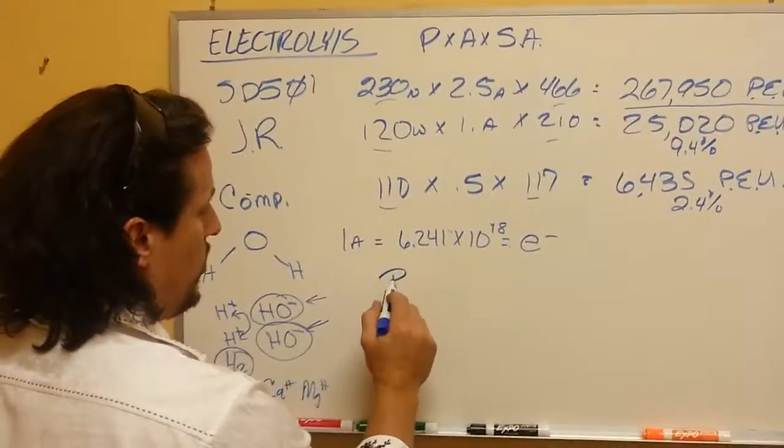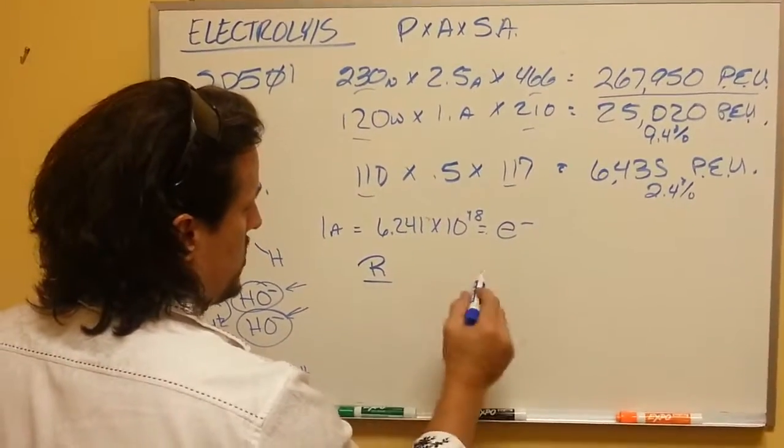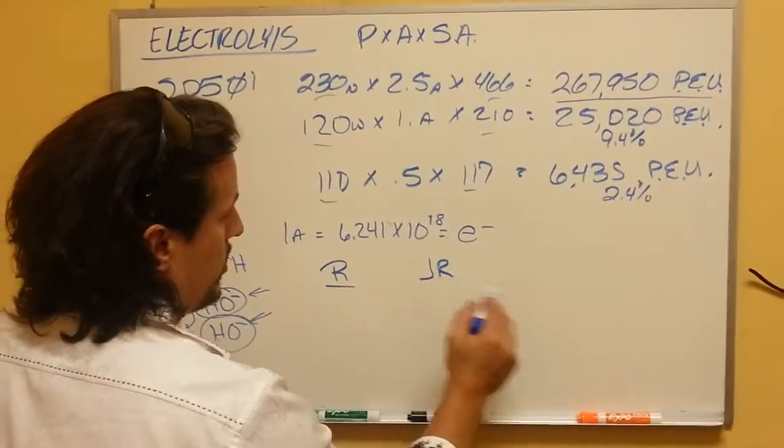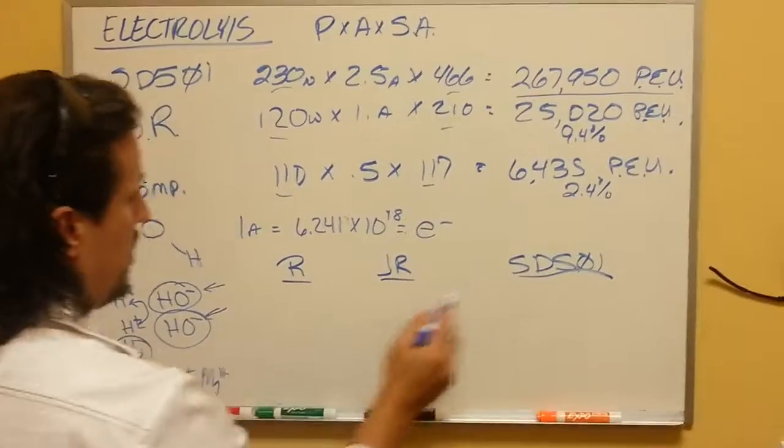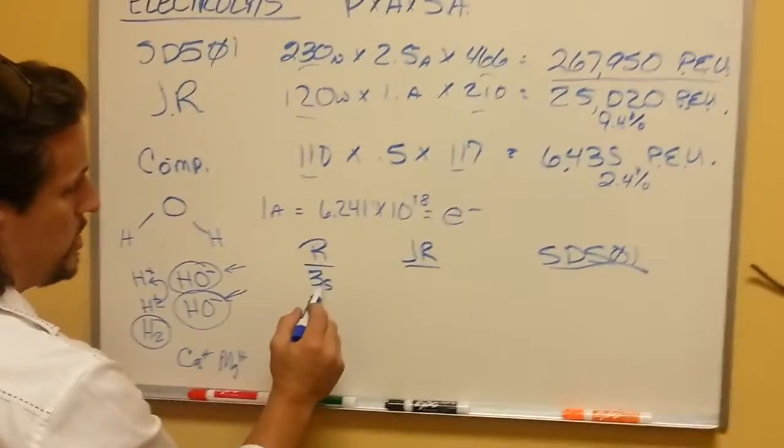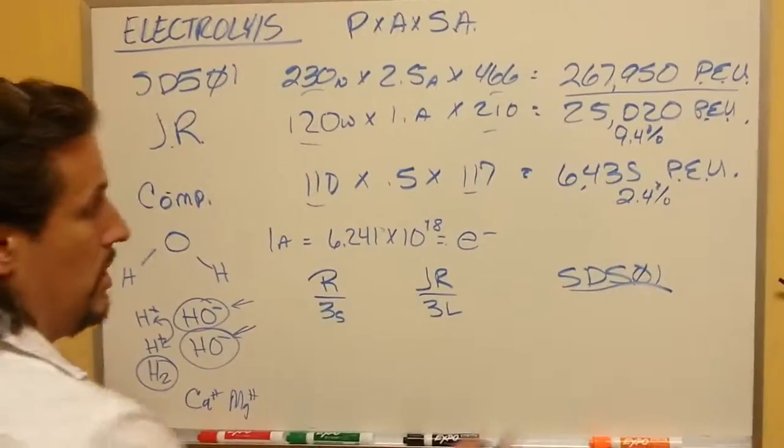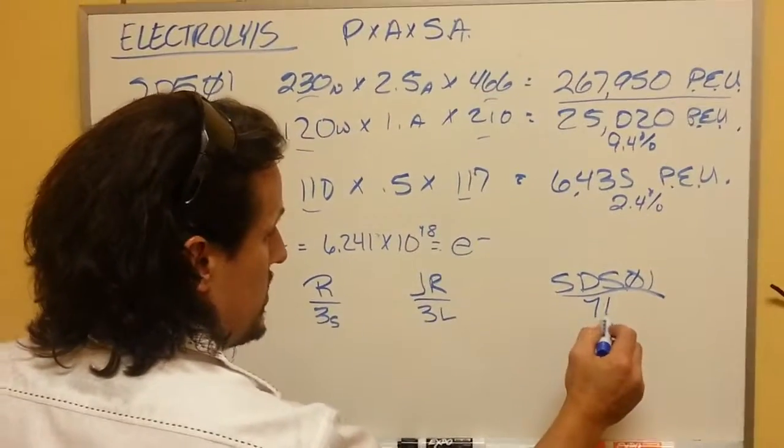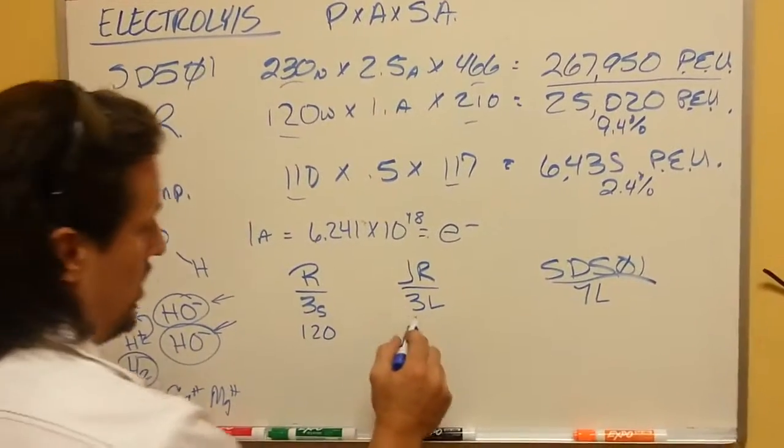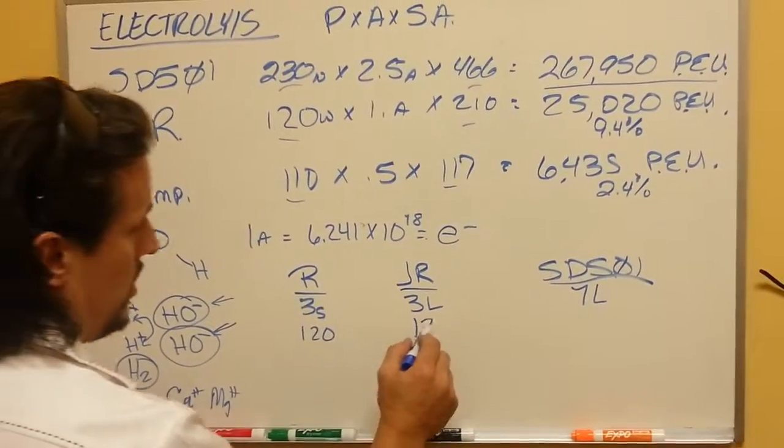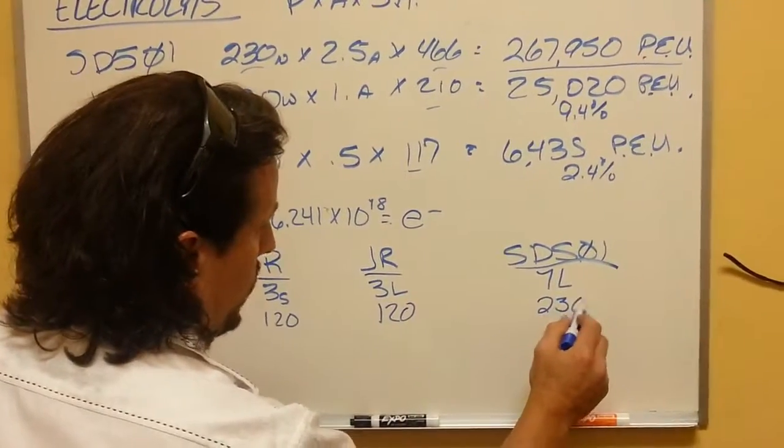So if you were to take the three main units that Enagic sells, you have the travel unit known as the R, the junior, and the SD501. Well, the R has three small plates, the junior has three large plates, the SD501 has seven large plates. This has 120 watts, this has 120 watts, this has 230 watts.